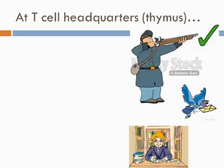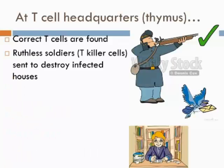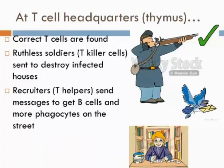The macrophages then send for more help using their little messengers — their cytokines. Eventually the message arrives at T cell headquarters in the thymus. Here they select which T cells are correct — the ones with the right uniform to fight off the pathogens. They send out their ruthless soldiers, the killer cells, to destroy any of the houses that have been infected. The killers know to go straight for the houses that have the limbs displayed on their surface so they can destroy them.